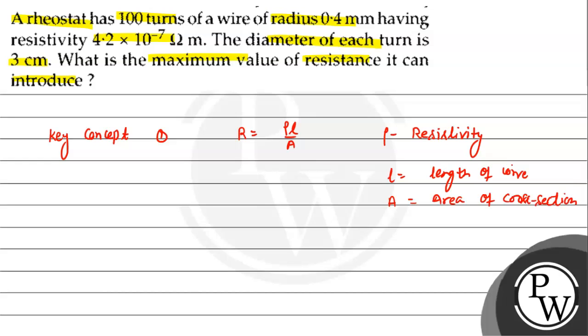The given resistivity is 4.2 × 10^-7. Let's find the area of cross section. The area will be πr². So π is 3.14 × r².